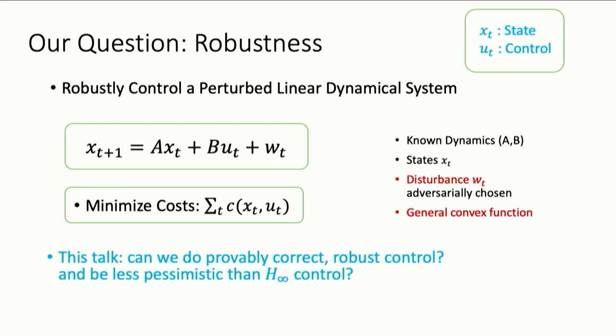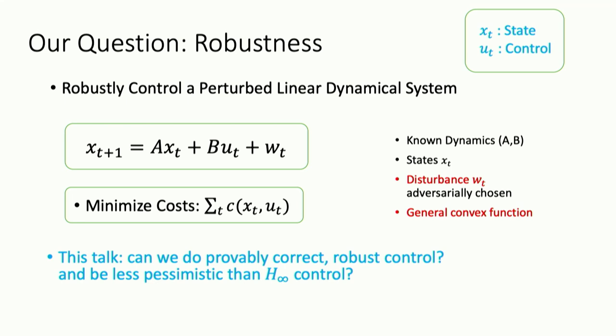Today we're going to look at a question related to robustness in this setting. Let's specify the model a little more broadly. Consider a setting where the costs don't have to be quadratic — let's consider the cost to be convex. It's nice to generalize the cost to be convex because sometimes with constraints it might be more natural to put them in the system as soft constraints. The dynamics model is the same. Let's assume we know A and B for a moment, and these disturbances W_t we're going to think of as being adversarially chosen. Can we provide some way to obtain a provably correct robust control algorithm?